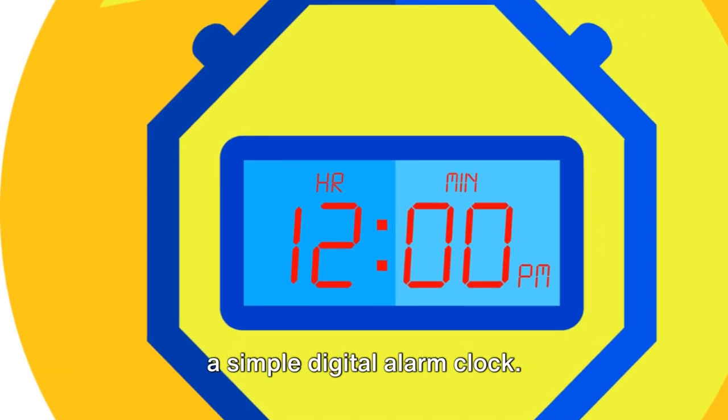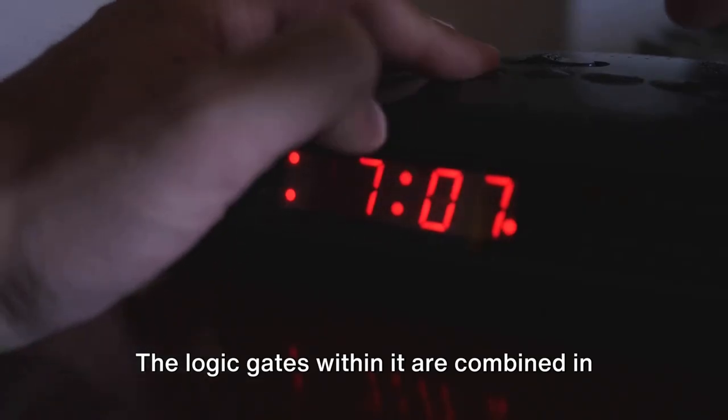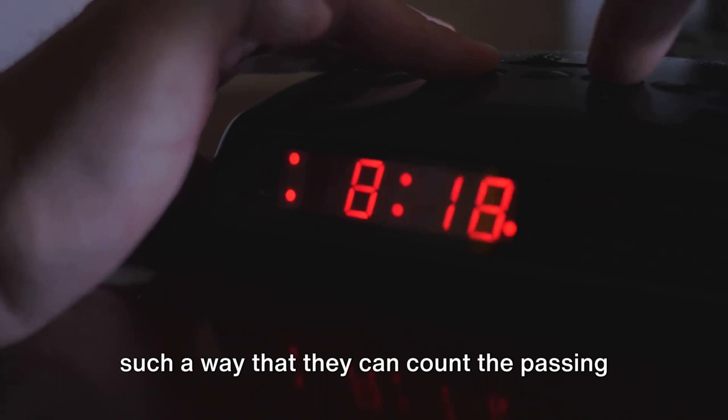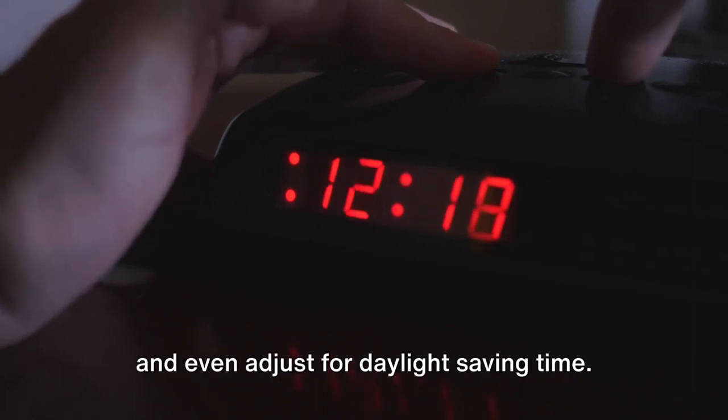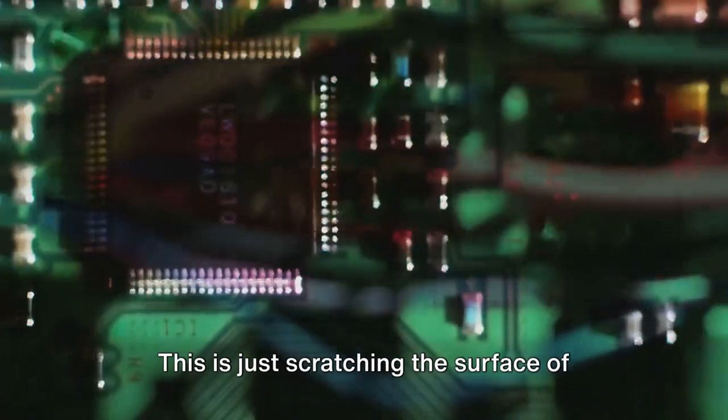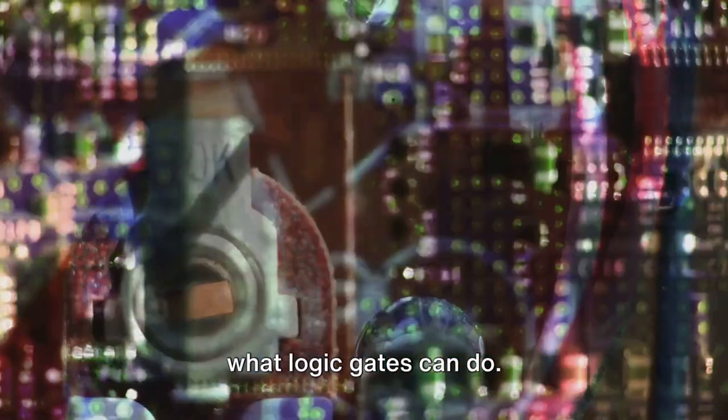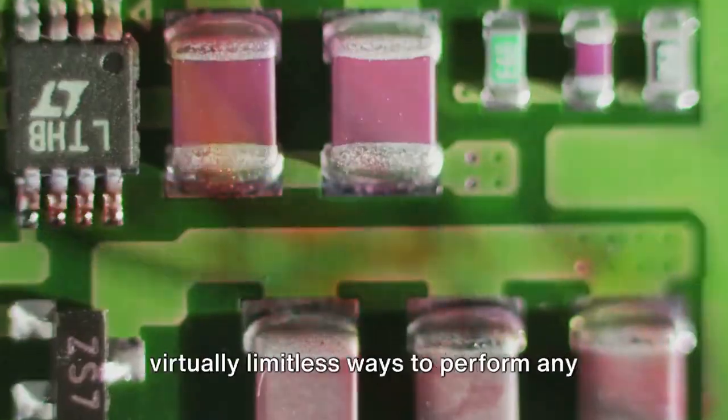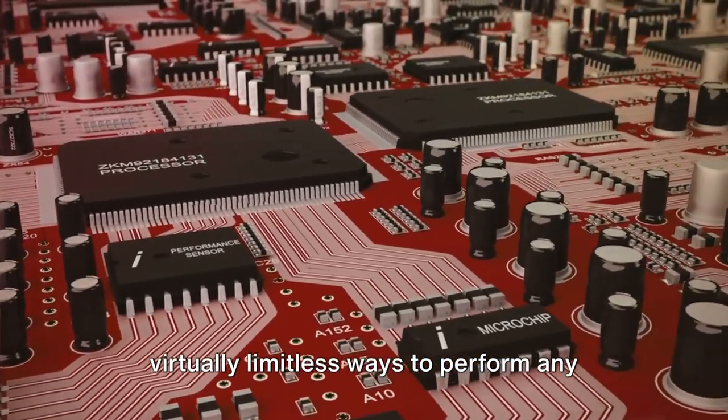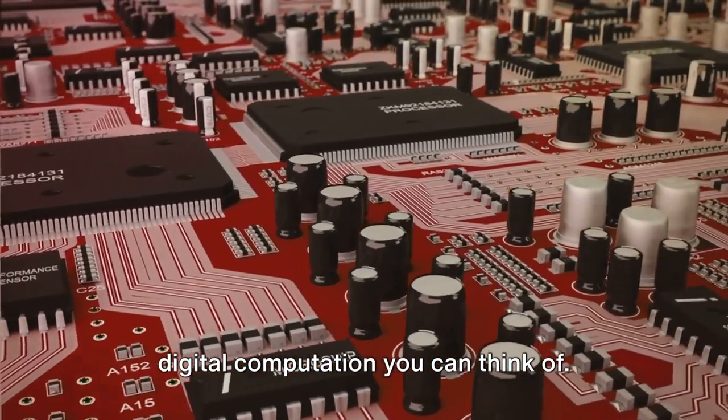To give a practical example, think about a simple digital alarm clock. The logic gates within it are combined in such a way that they can count the passing seconds, trigger an alarm at a set time and even adjust for daylight saving time. This is just scratching the surface of what logic gates can do. The beauty of these little building blocks is that you can combine them in virtually limitless ways to perform any digital computation you can think of.